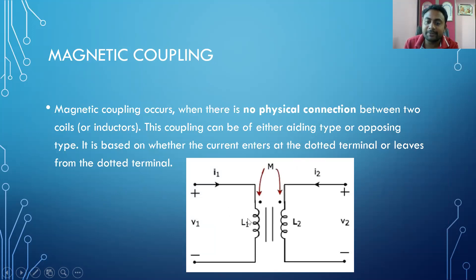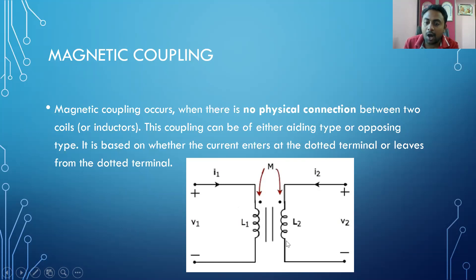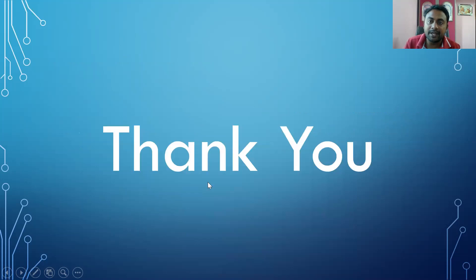Magnetic coupling means there is no physical contact between the two coils, but the current flowing in one coil produces an EMF in the other coil. In this case also we have two types: aiding and opposing. If the two dots are placed on the same side — both on the current entering side or both on the current leaving side — we call it series aiding. If they are on opposite sides, we call it series opposing. Thank you, hope you understood. Have a nice day, take care.